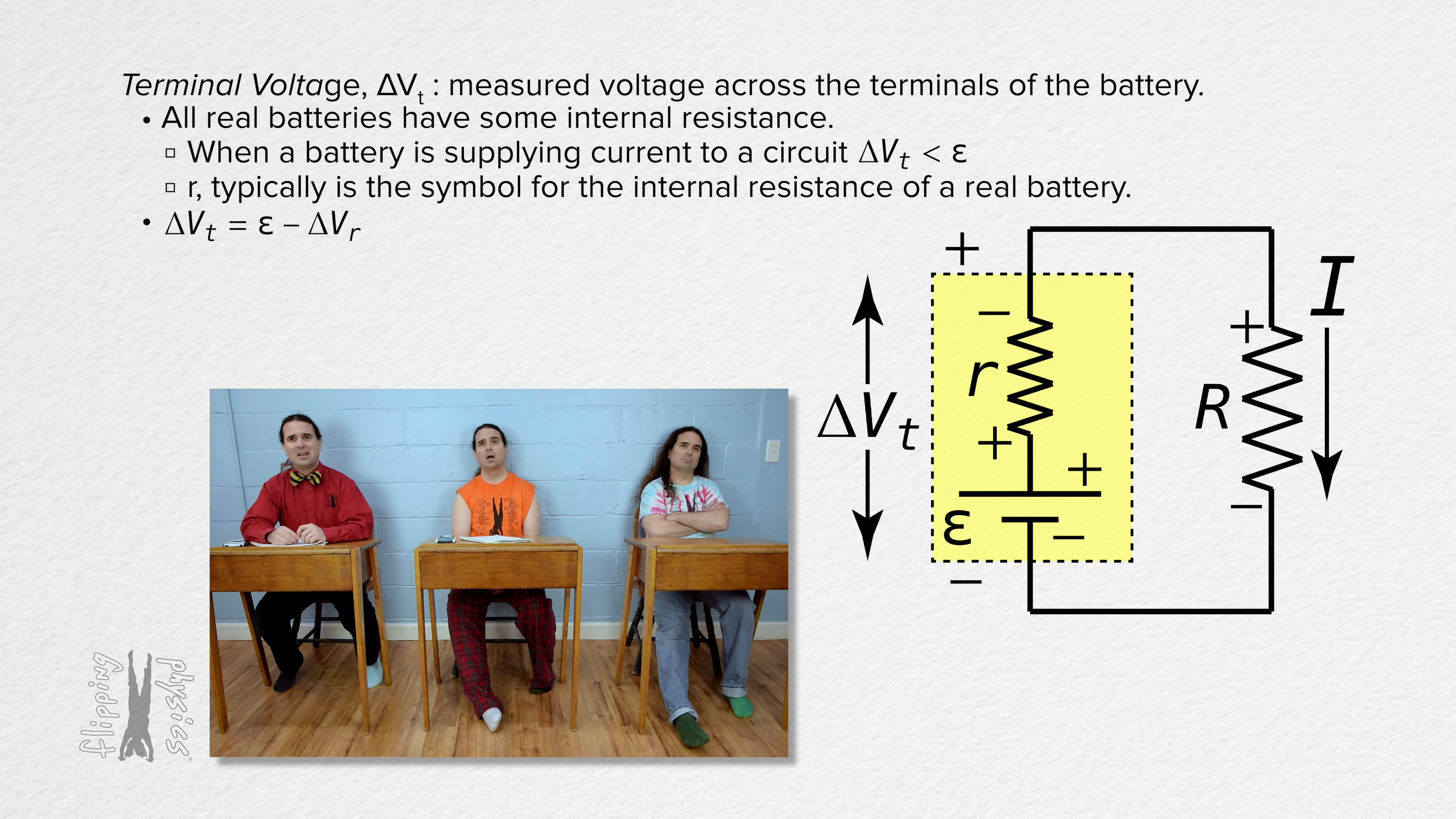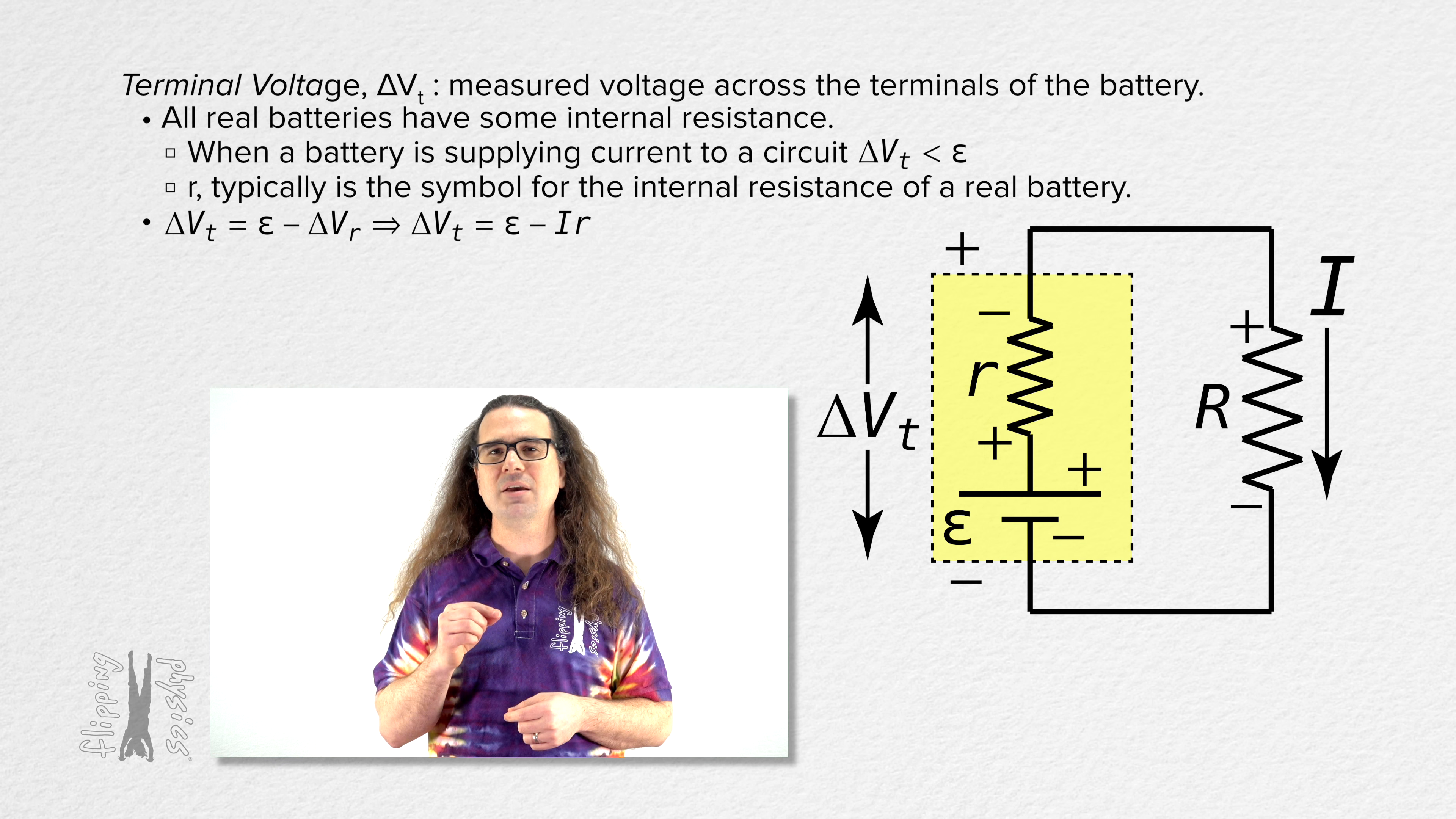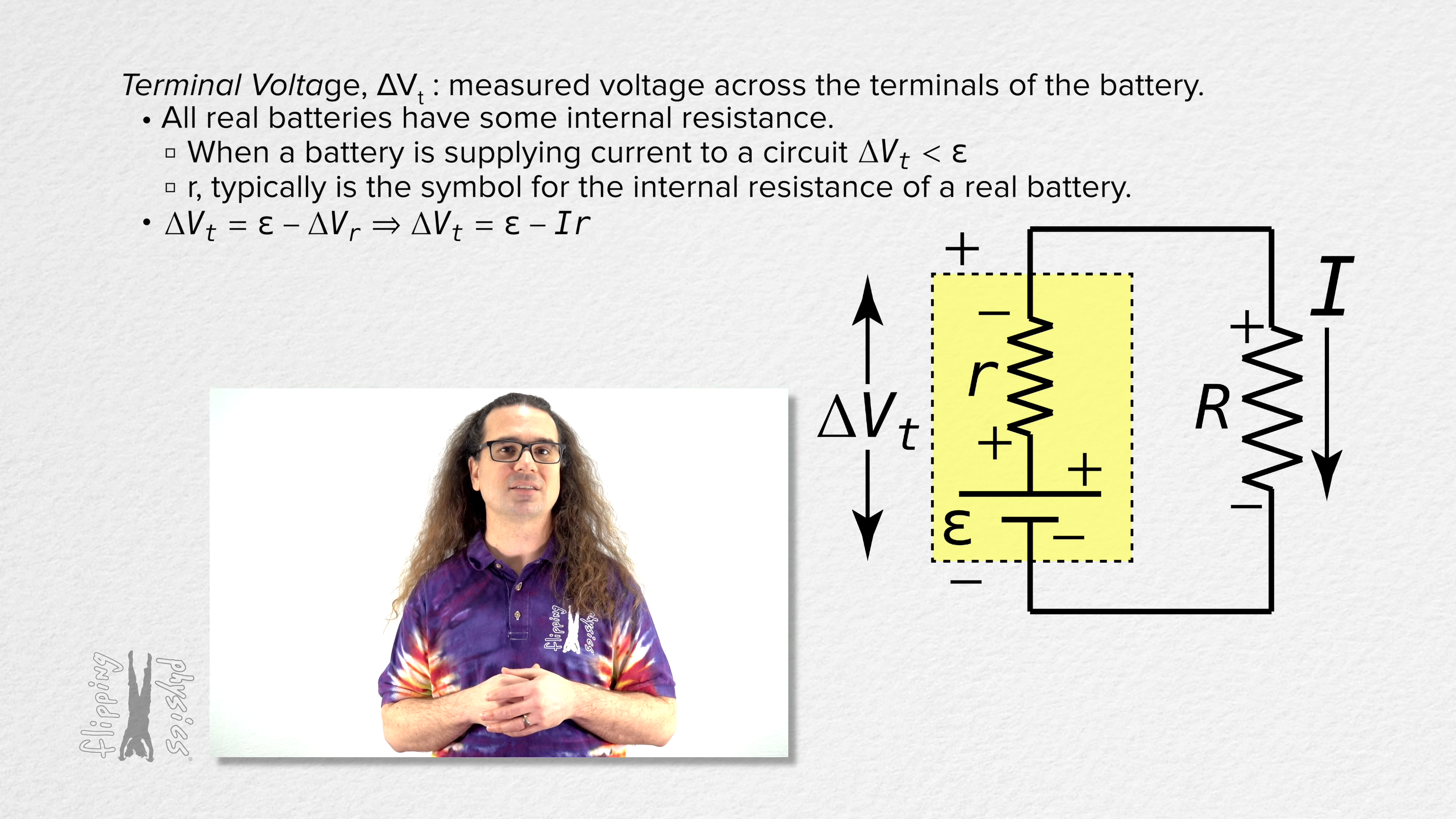We already showed that electric potential difference equals current times resistance. Therefore, the terminal voltage across a battery equals the EMF of the battery minus current through battery times the internal resistance of the battery.